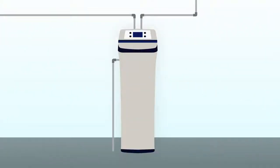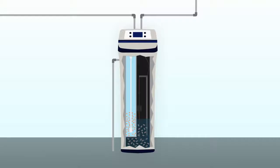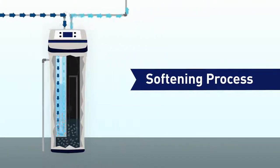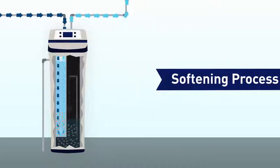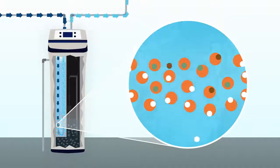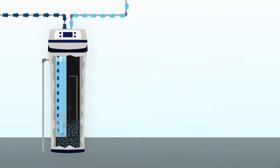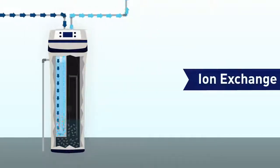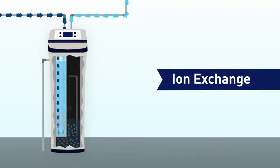When water enters your home, the first stage of softening begins in the resin tank. Water circulates in the tank, where tiny sodium-covered resin beads swap the calcium and magnesium in the water for the sodium they're holding. The beads act as a scrubber, removing the hardness minerals out of your water. This process is referred to as ion exchange, and soft water is the result.